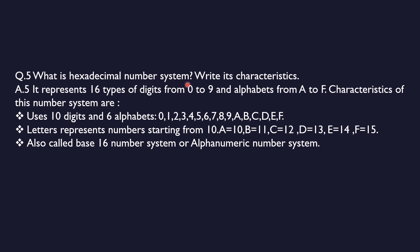The next question is: what is the hexadecimal number system and what are its characteristics? It represents 16 types of digits. This system represents 0 to 9, and then uses alphabets. Because after 9 it is 10, alphabets are used to represent those values. The characteristics are that it uses 10 digits and 6 alphabets.